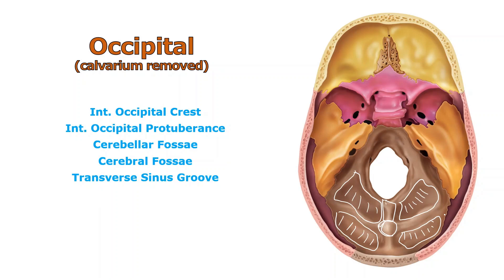There is a ridge of bone here called the groove for the transverse sinus. And perpendicular to that is the groove for the sagittal sinus — something we'll talk about in lectures further down the road.